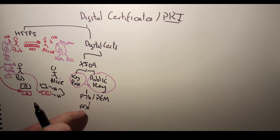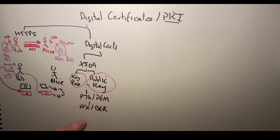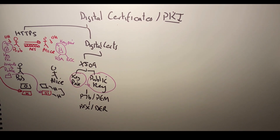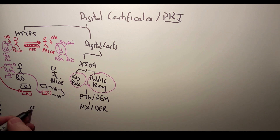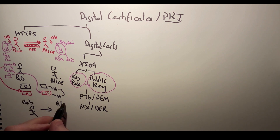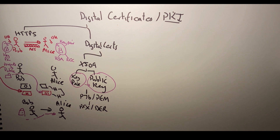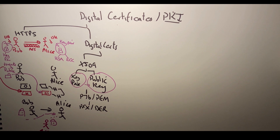We can also get PFX files, which are password protected, and DER files. Those files store the public key. Basically, what we want is for Bob to be able to send Alice his public key in a trusted way — the public key needs to come over and Alice needs to know that it is Bob's public key. What we don't want is for Eve to send a fake public key pretending to be Bob's.